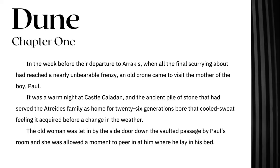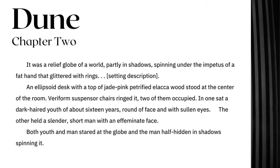Dune, Chapter 1: 'In the week before their departure to Arrakis, when all the final scurrying about had reached a nearly unbearable frenzy, an old crone came to visit the mother of the boy, Paul. It was a warm night at Castle Caladan, and the ancient pile of stone that had served the Atreides family as home for twenty-six generations bore that cool, sweat feeling it acquired before a change in the weather. The old woman was let in by the side door down the vaulted passage by Paul's room, and she was allowed a moment to peer in at him, where he lay in his bed. It was a relief globe of a world, partly in shadows, spinning under the impetus of a fat hand that glittered with rings.'